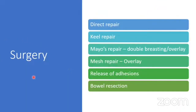The surgery involves direct repair, Keel repair, Mayo's repair (also called double-breasting or overlay repair), and mesh repair — which can be overlay or underlay. There is also a need to proceed with release of adhesions and even resection of bowel if there is evidence of strangulation.